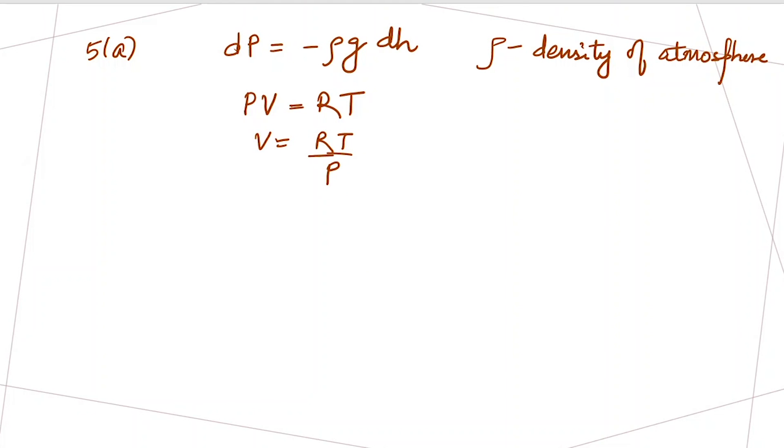We can write this change in pressure which is equal to minus rho g times the change in height. We can write this density as mass over volume times g dh, so we can now substitute for volume.